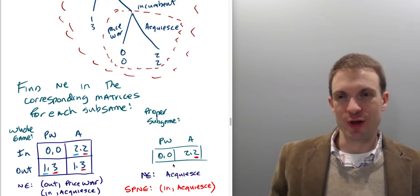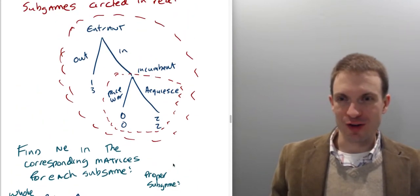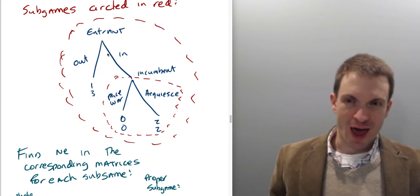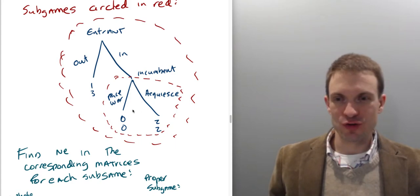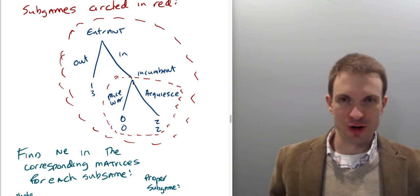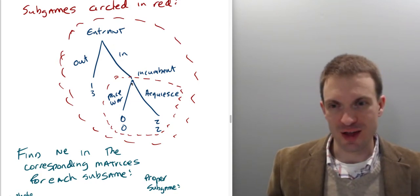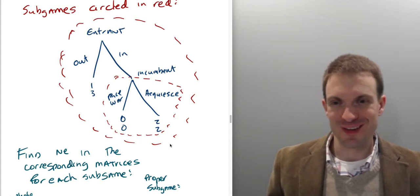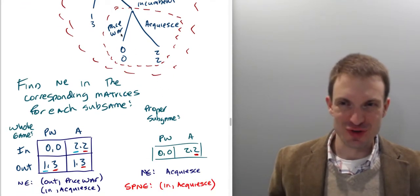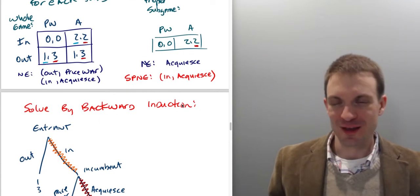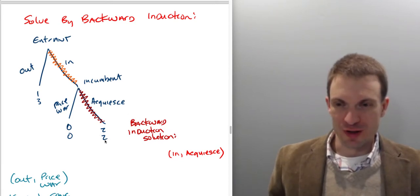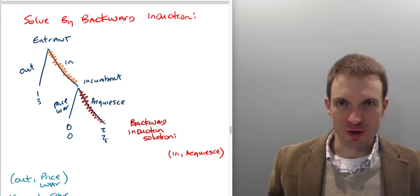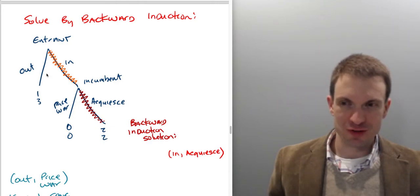We eliminate 'out, price war' because it stipulates price war, which is not consistent with Nash play in the sub-game. Once the entrant has actually entered, it is not rational — not sequentially rational — for the incumbent to choose price war, since they would be giving up a payoff of two. Once entry is a foregone conclusion, the incumbent must acquiesce.